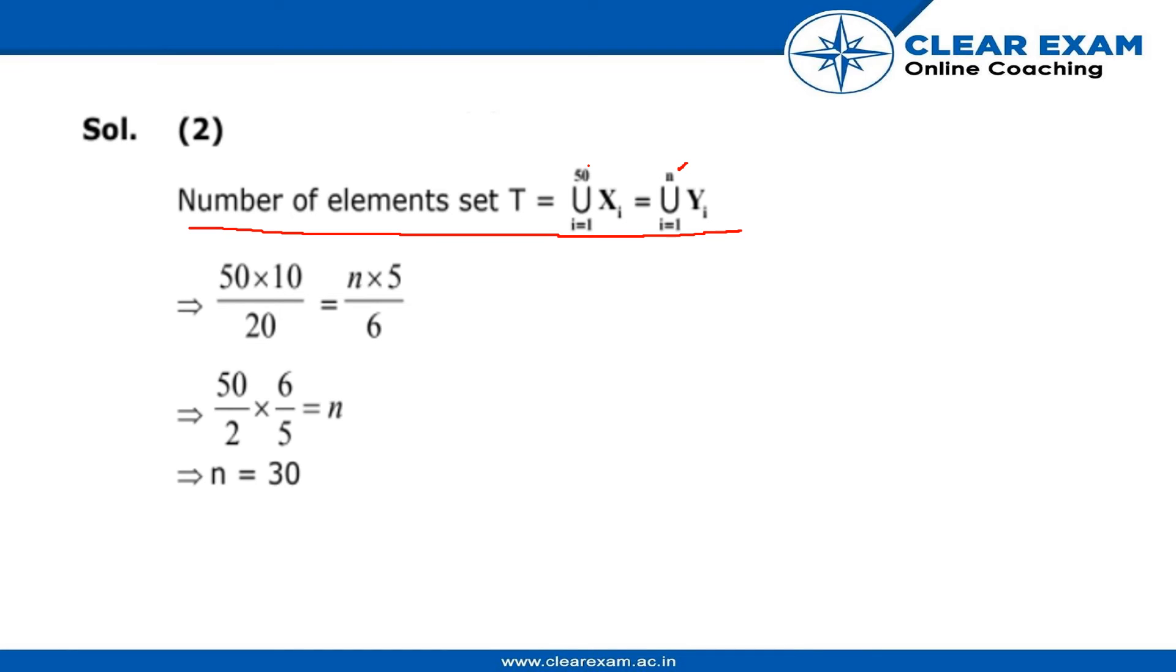As each Xi set has 10 elements and the Yi sets have 5 elements, and each element of T belongs to exactly 20 sets of Xi.